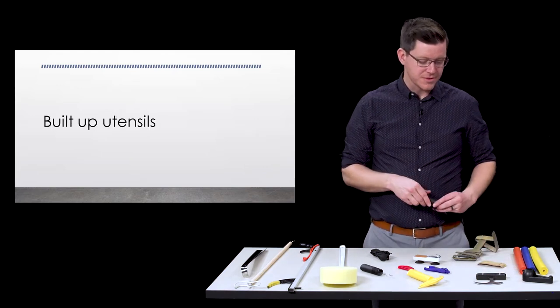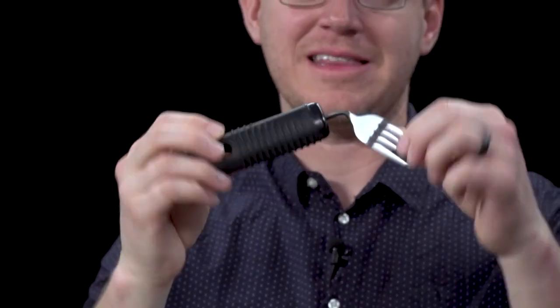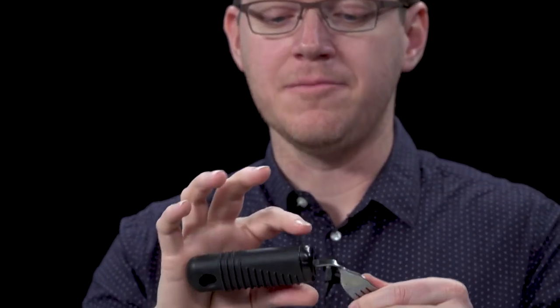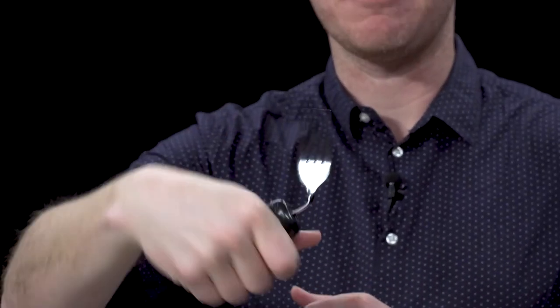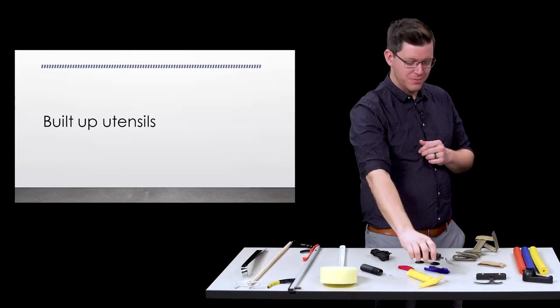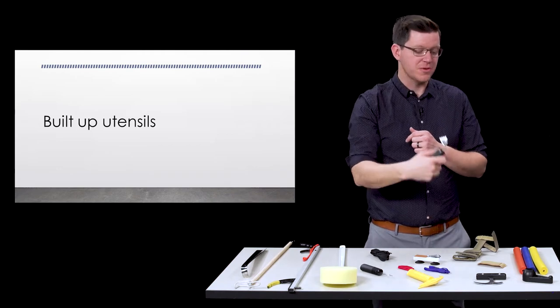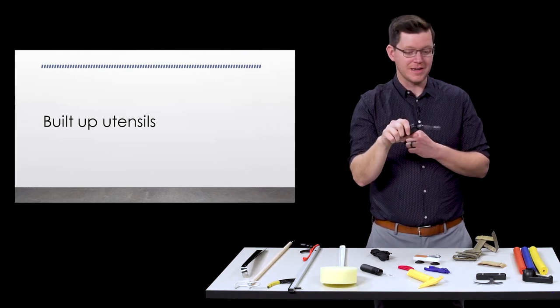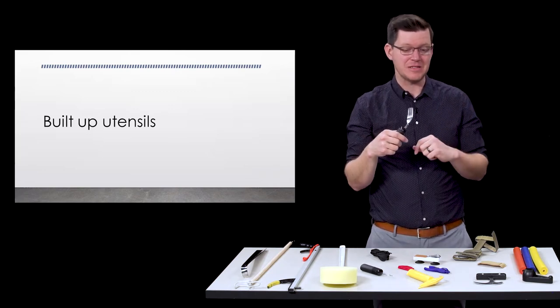Another thing that is often used are these built up utensils. They actually have utensils that they build up for you already and allow it for easier grip. You also notice that it's bent, it's an angled utensil. So what happens is when you get the food and bring it up to your mouth it's already in the position to get to you rather than having to do a lot more maneuvering with your shoulder or wrist.